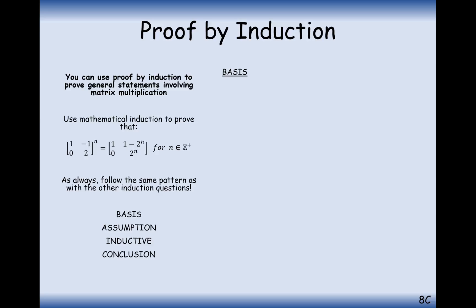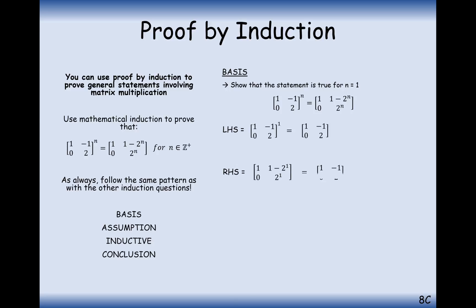Remember, proof by induction only works with positive integers n — we're not going to have matrices to the power of a half, for example. Basis step, same as always: prove true for n equals 1. Substituting n=1 on the left-hand side gives this matrix, and substituting 1 on the right-hand side gives the same. Left-hand side equals right-hand side, so the base step works.